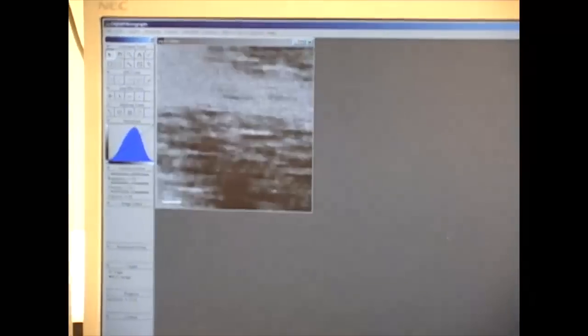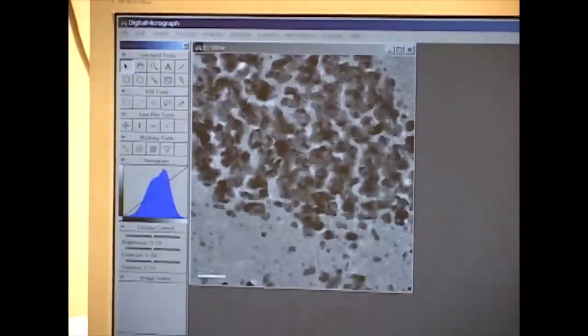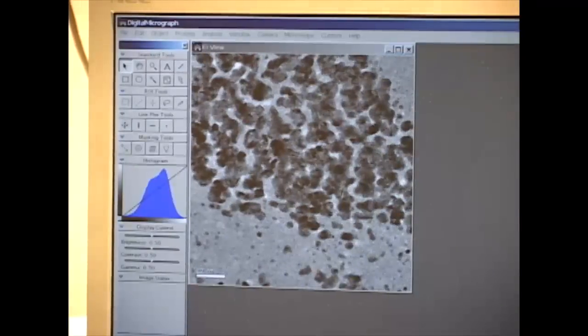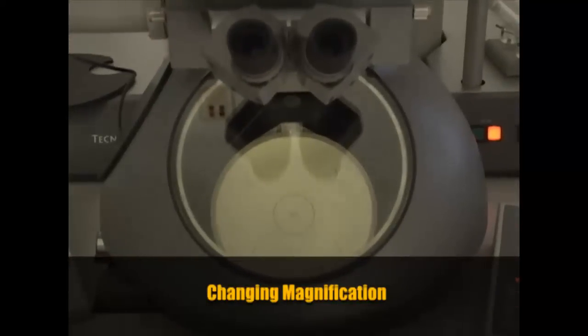You can scroll the field of view using the joystick. The CCD builds an image by integrating repeated scans. To change the magnification, it is also necessary to adjust the intensity.